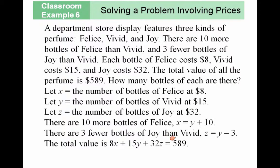There are three fewer bottles of Joy than Vivid, so Z would equal Y minus three. The total value is 8X plus 15Y plus 32Z equals 589.